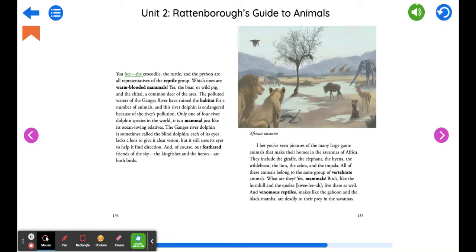You bet! The crocodile, the turtle, and the python are all representatives of the reptile group. Which ones are warm-blooded mammals? Yes, the boar, or wild pig, and the chital, a common deer of the area.